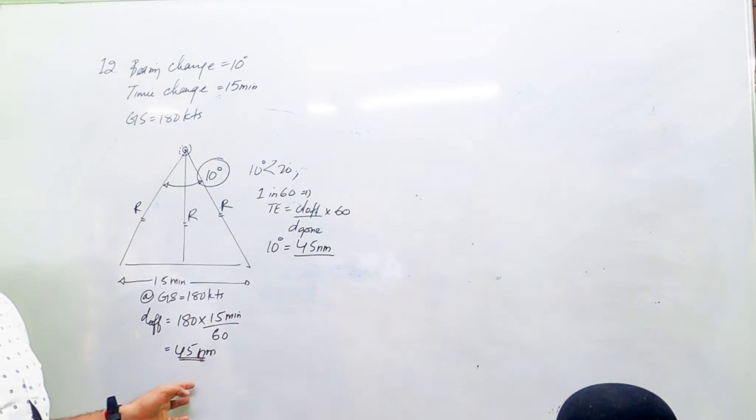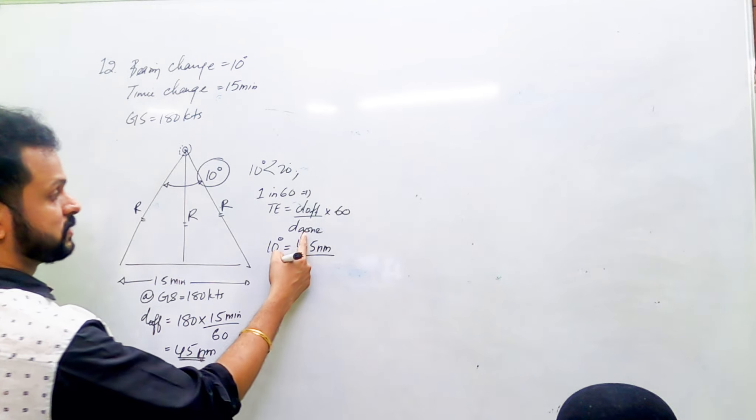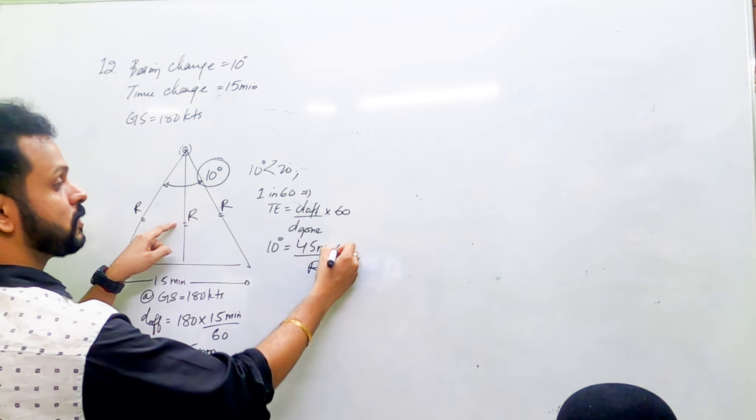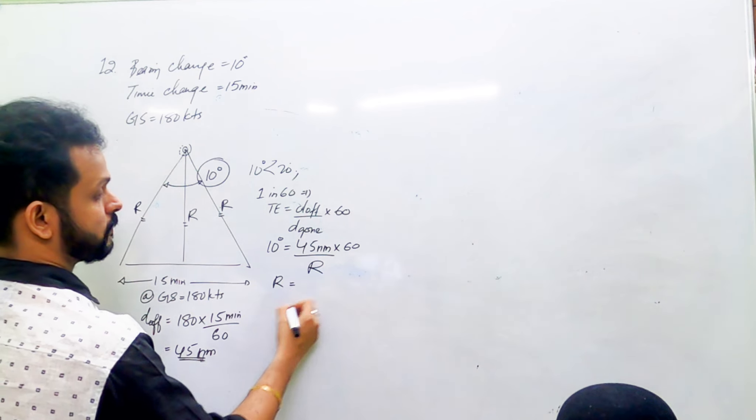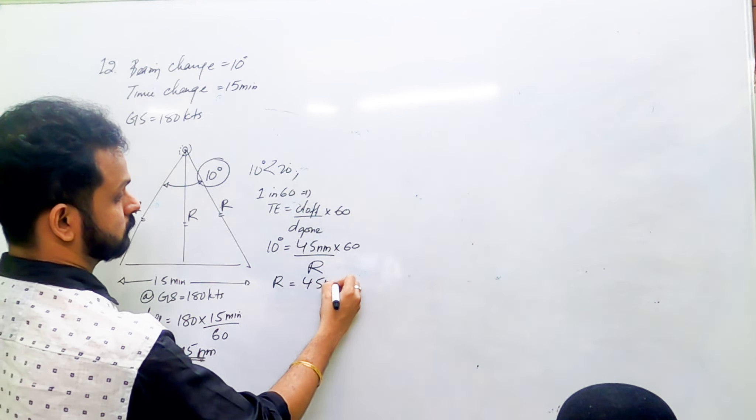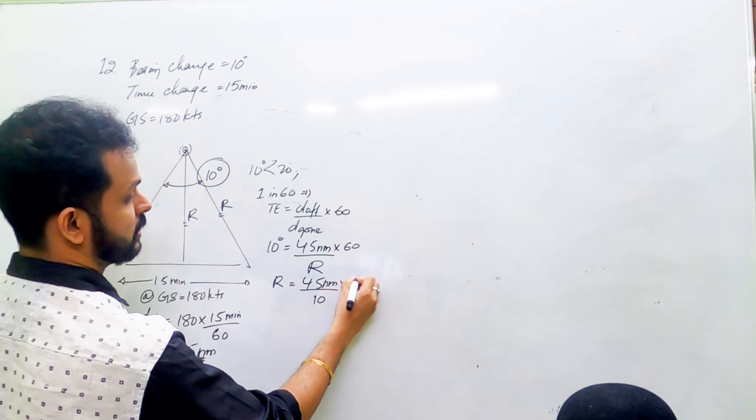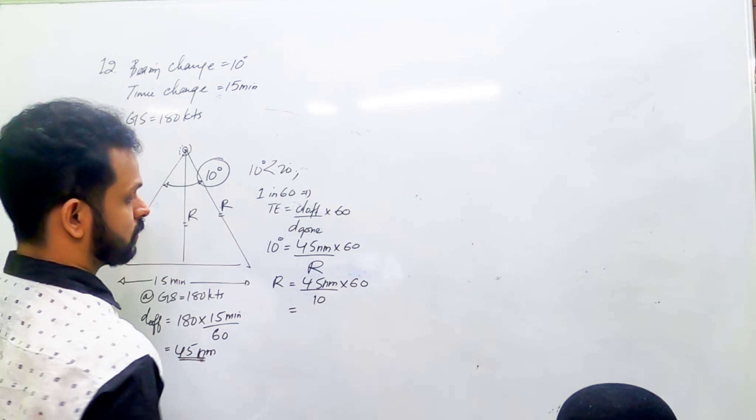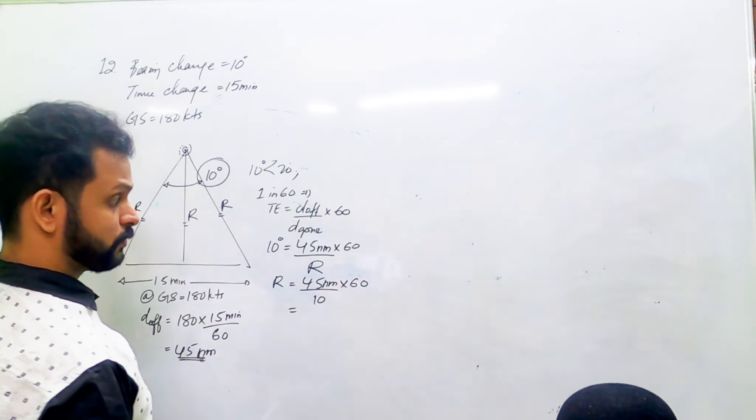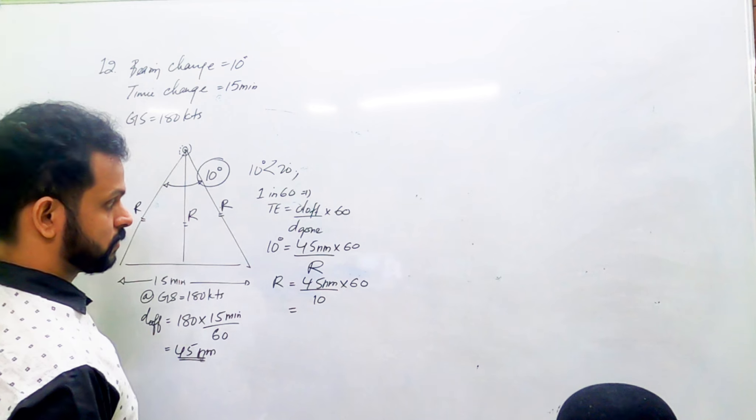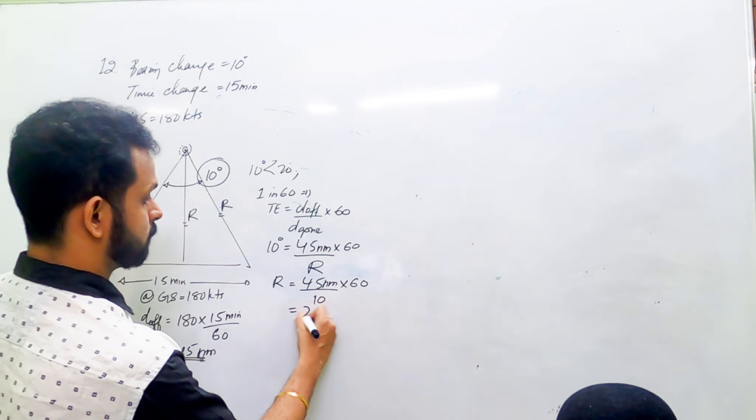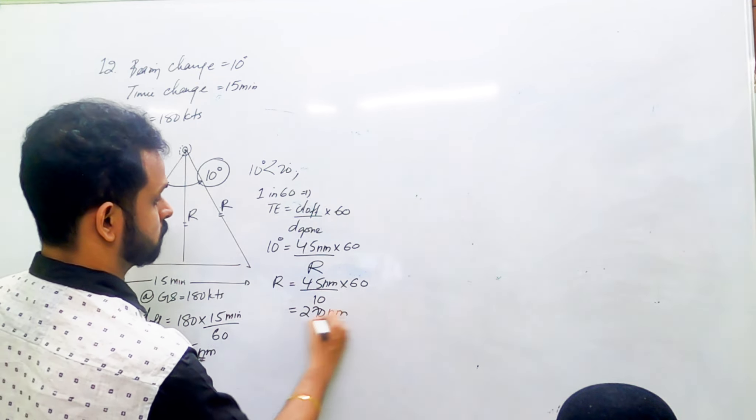Yes, that's 45 nautical miles for distance OF. Using the one in 60 rule, range equals distance OF times 60 divided by track error. So the range is 45 times 60 divided by 10, which equals 270 nautical miles.